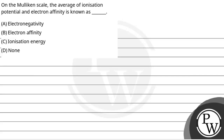Hello, let's start the question on the Mulliken scale. The average of ionization potential and electron affinity is known as — what?